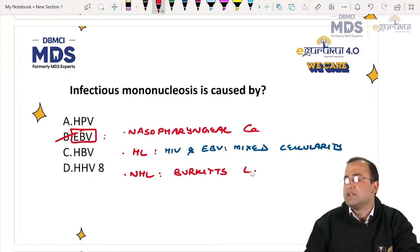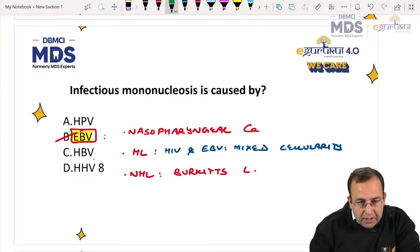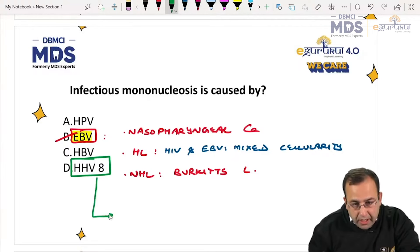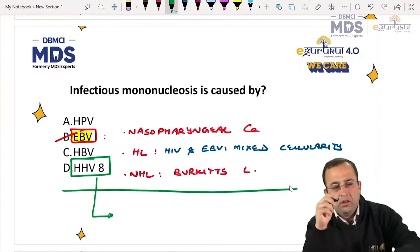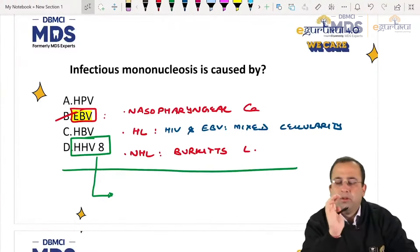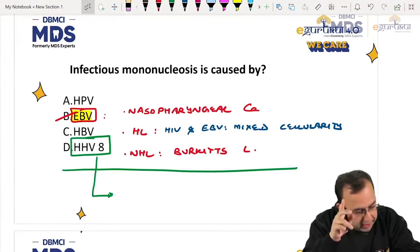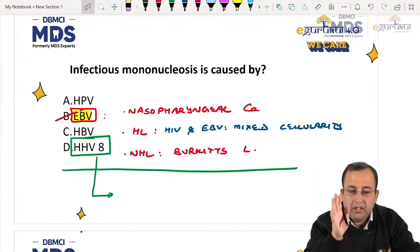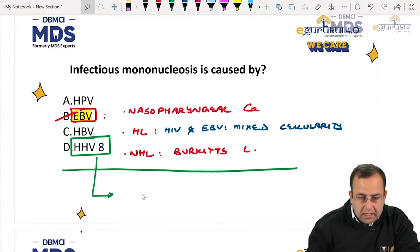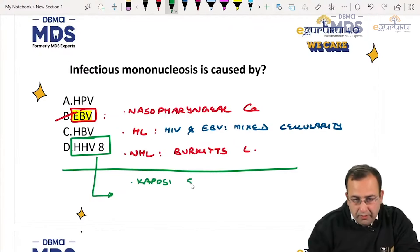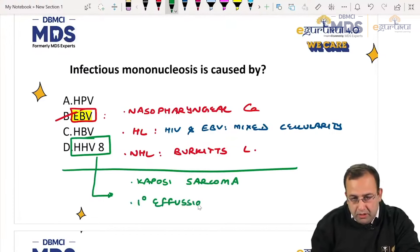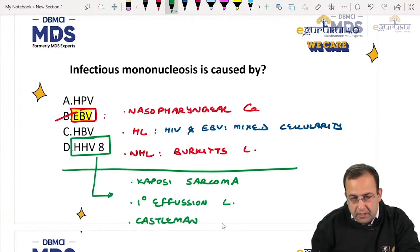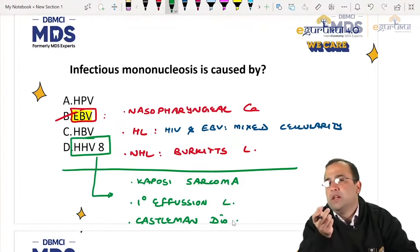HHV8 — human herpes virus 8 — was a recent medical segment PYQ so can be asked in your paper also. HHV8 is associated with three diseases: Kaposi sarcoma, primary effusion lymphoma, and Castleman disease.